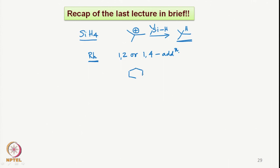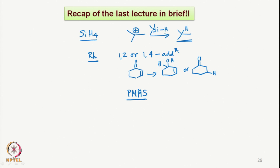From an enone, we can get either a 1,2 reduced product or a 1,4 reduced product depending on the bulk of the corresponding groups attached to silicon. Then towards the end, we saw polymethylhydrosilane as PMHS, which is something like a polymer. This polymethyl molecule is liquid to handle, is stable, air-stable, and inexpensive, and how it can be used in reducing various kinds of molecules similar to the silanes we discussed.